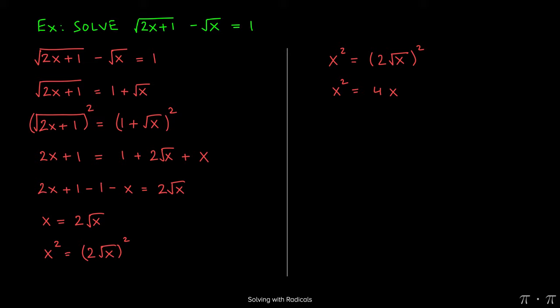At this stage, we recognize that we have a quadratic. We solve those typically by setting the equation equal to 0, and then factoring. So here, if we move the 4x to the left-hand side, we're left with x squared minus 4x equals 0. We see that there's a GCF of x, so we factor that out.